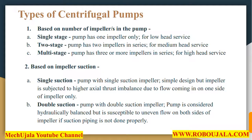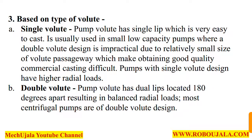The third classification is based on types of volute. In a single volute pump, the volute has a single lip, which is easy to cast and is usually used in small low-capacity pumps where double volute design is impractical due to the relatively small size of the volute passageway, making it difficult to obtain good quality commercial castings. Pumps with single volute design have higher radial loads. In a double volute pump, the volute has double lips located 180 degrees apart, resulting in balanced radial loads. Most centrifugal pumps are of double volute design.